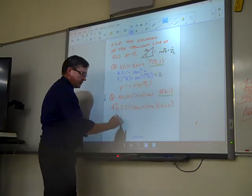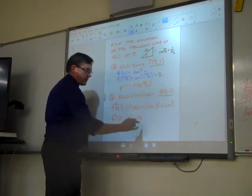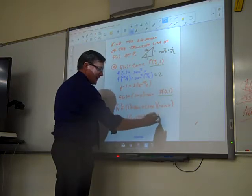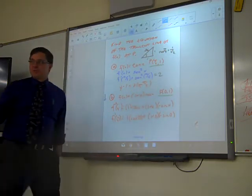Now I'll just plug in 0. That prime of 0. 1 times cosine of 0, which is going to be 1. We'll get there in a second. 1 plus 0 times negative sine of 0. Again, sine of 0 is 0. This is, remember, the unit circle, which sometimes students struggle with.